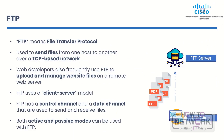File Transfer Protocol, or FTP, is a standard network protocol used to send files from one host to another over a TCP-based network like the internet. FTP is one of the oldest and most popular ways to move files across the internet. Users can use it to upload and download files, make and delete directories, and manage file permissions. FTP is usually used by businesses and organizations to move large files like software updates, multimedia content, and other data between servers, workstations, and clients. Web developers also frequently use FTP to upload and manage website files on a remote server. FTP uses a client-server model where a client program asks the server to transfer files. FTP also has a control channel and a data channel used to send and receive files.